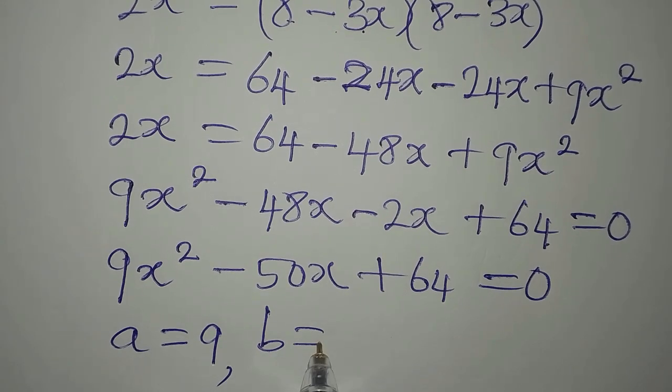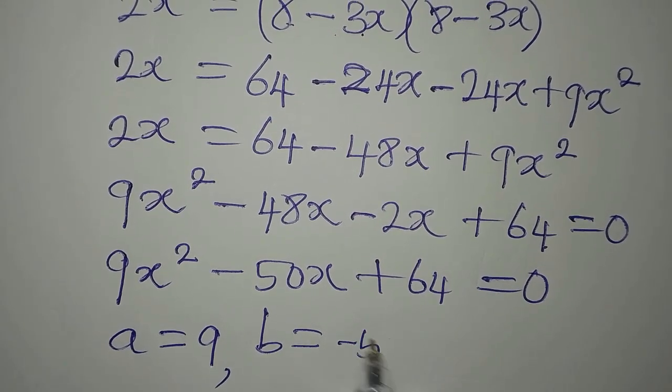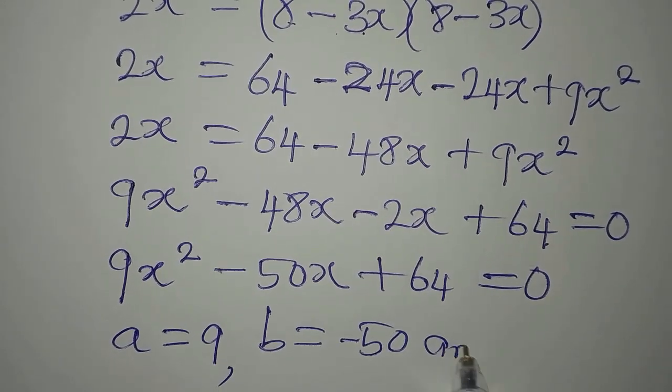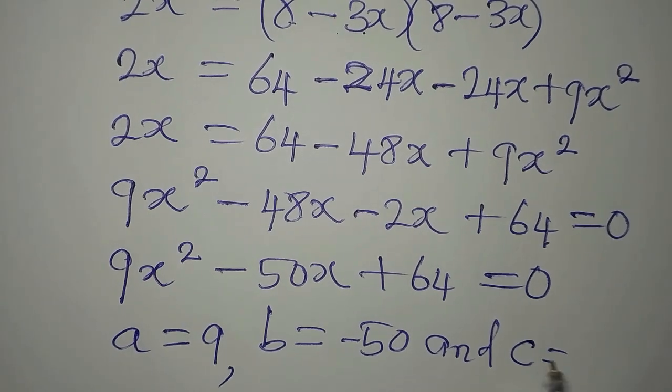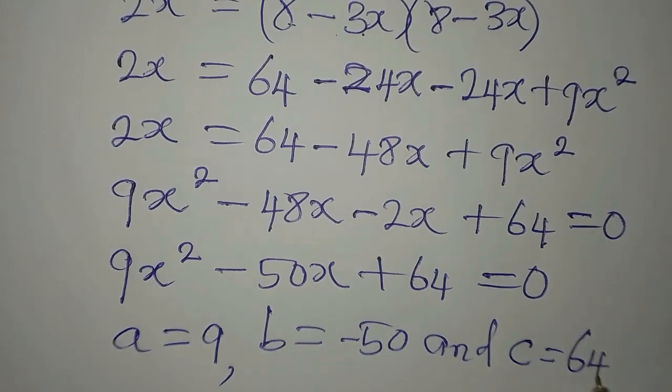B is the coefficient of x, that is minus 50. And our C is the constant, which is 64.